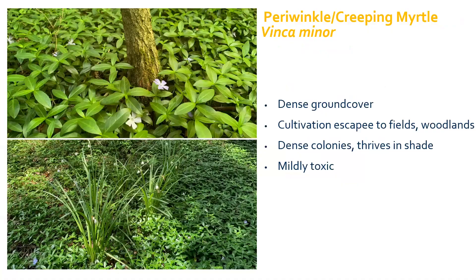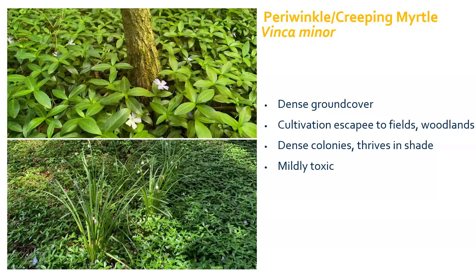Another bad ground cover you might see around is periwinkle or creeping myrtle. It was commonly used in the 1800s as ground cover because it readily takes spaces underneath trees that nothing else will grow under. It likes heavy shade, but the problem is the underground stems, called rhizomes, will keep spreading. Once a little fragment escapes your garden, it could take over a natural area like a forest. It also has a mildly toxic reaction, so you have to be careful with pets and don't want to eat it.